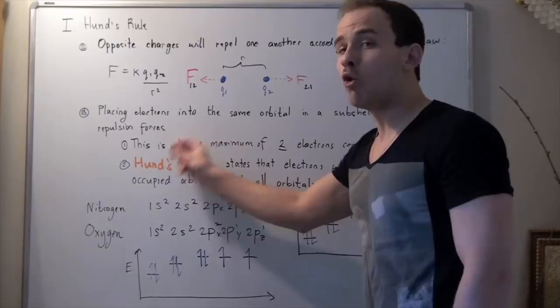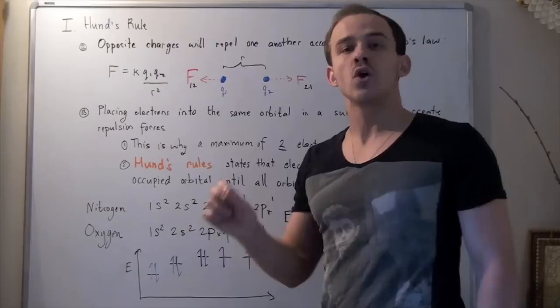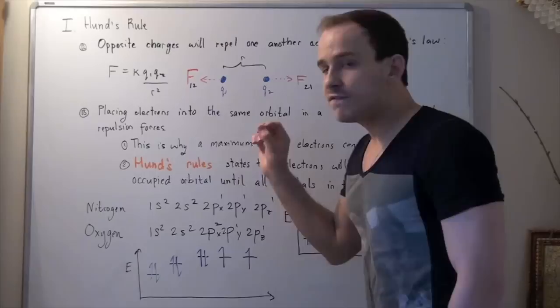And what Hund's rule states is the following. It says that electrons will not go into an occupied orbital, occupied by some electron, until all the orbitals within that sub-shell are already filled. So, for example, let's look at the electron configuration of nitrogen.